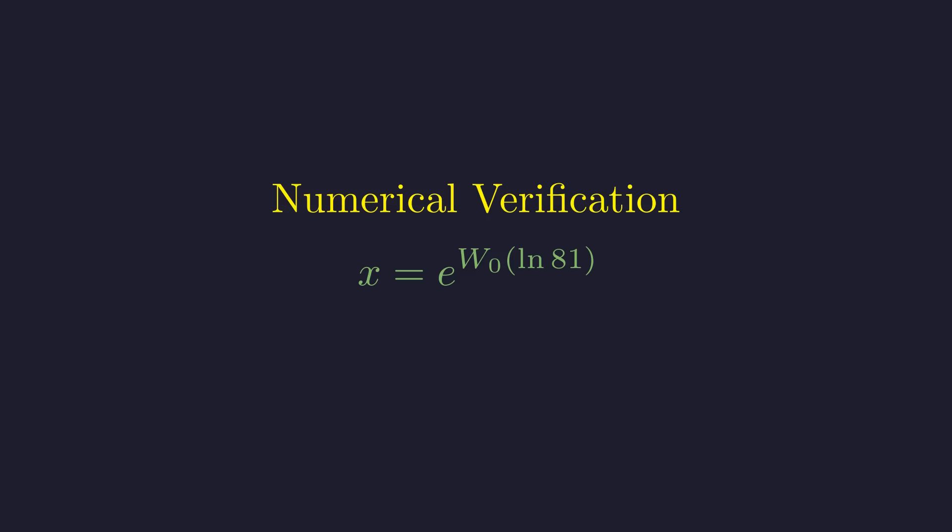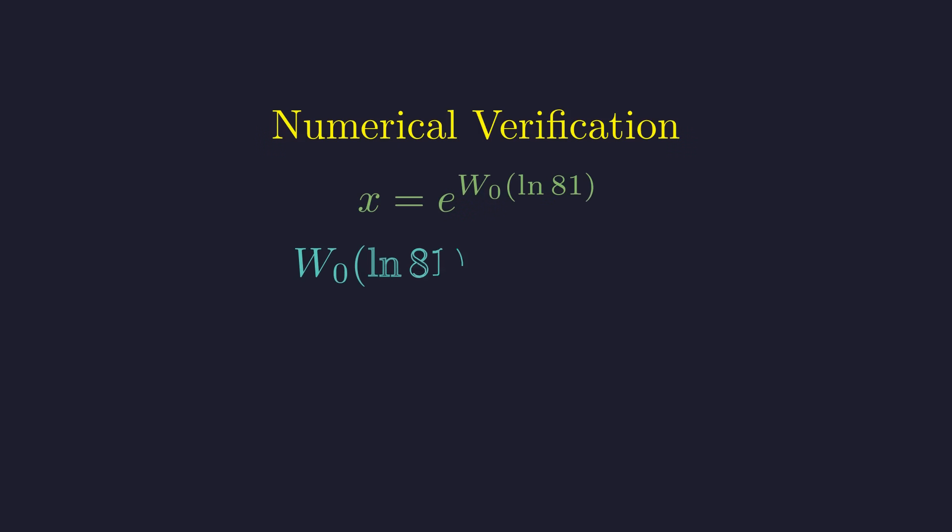To evaluate this, a computer or calculator must first find the value of the Lambert W function. You might wonder, how is this value actually calculated? There is no simple formula. Instead, computers use what are called iterative methods. These methods start with a guess and then systematically improve it until the result is highly accurate.